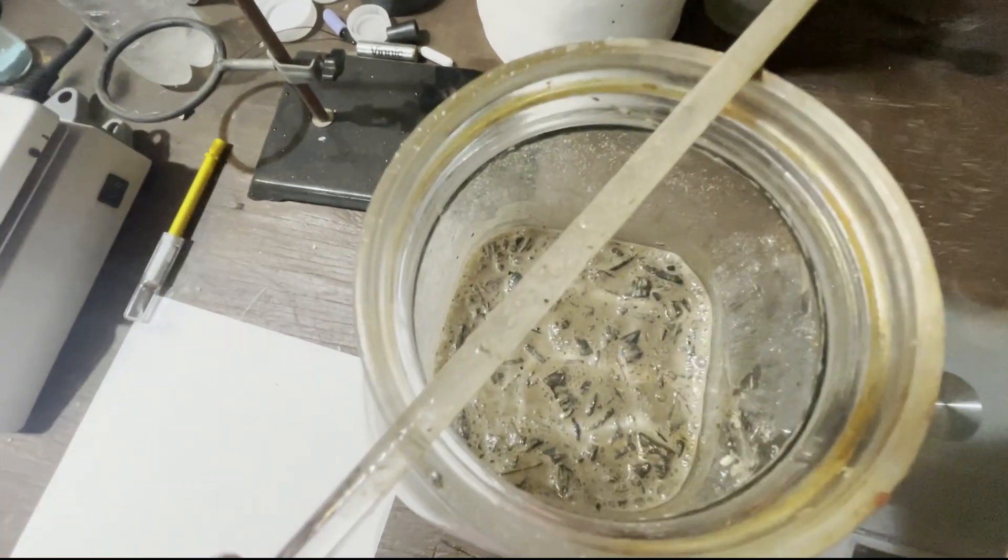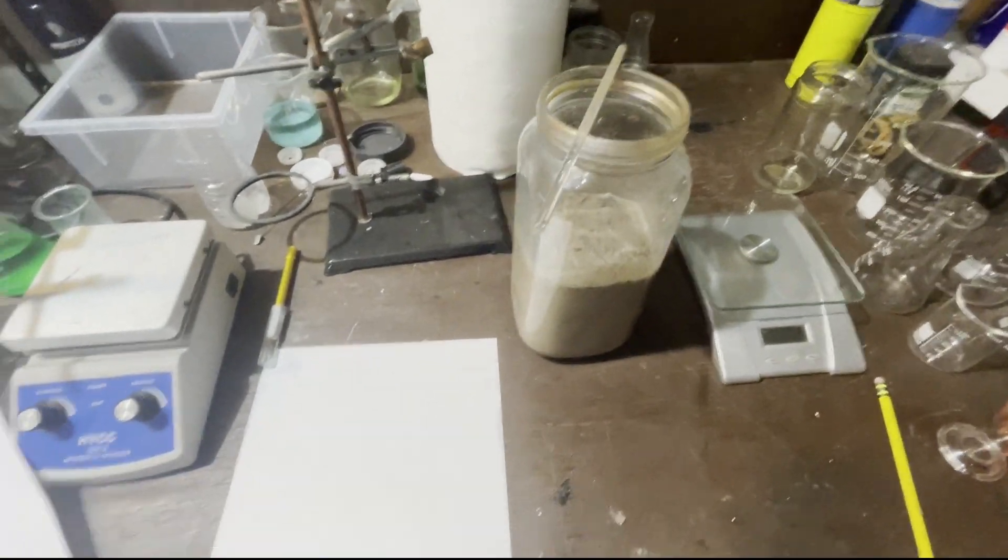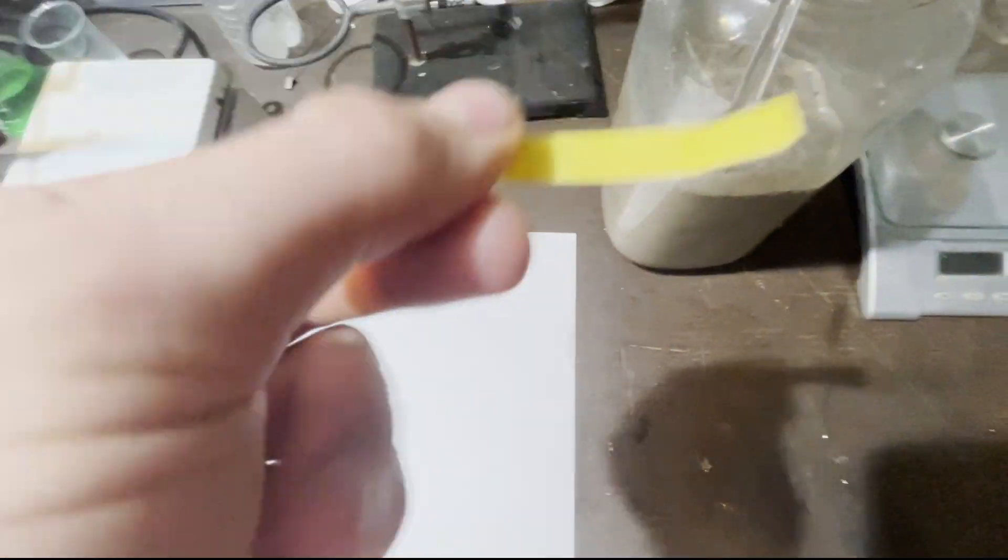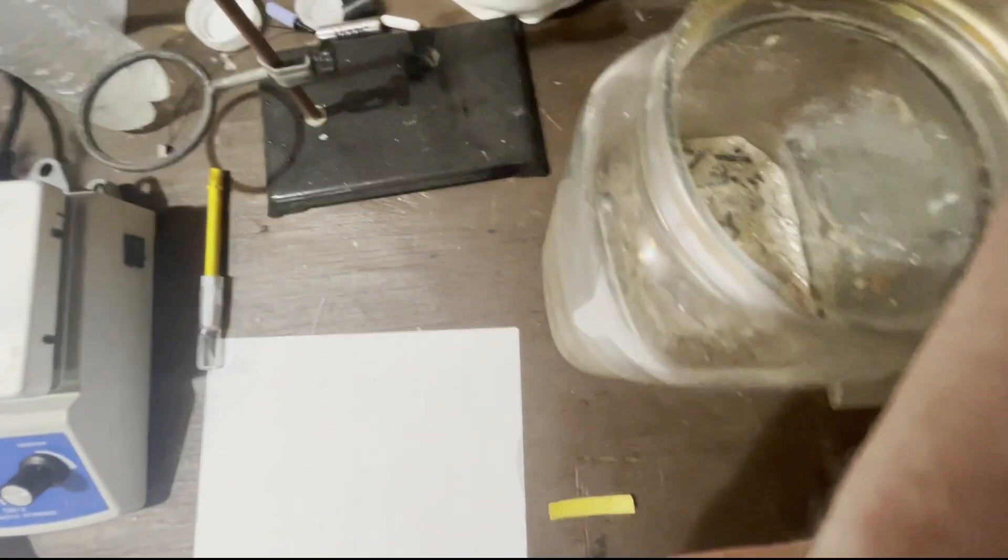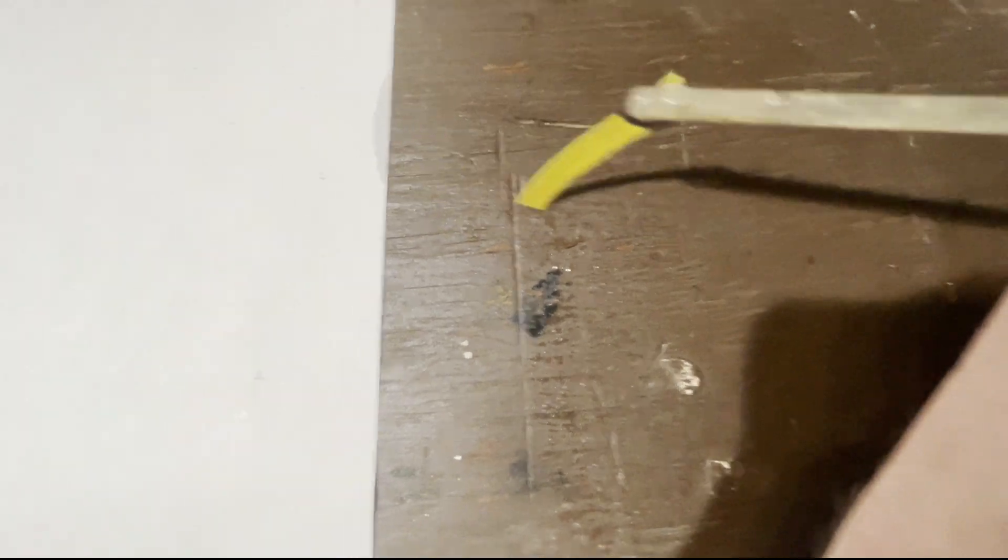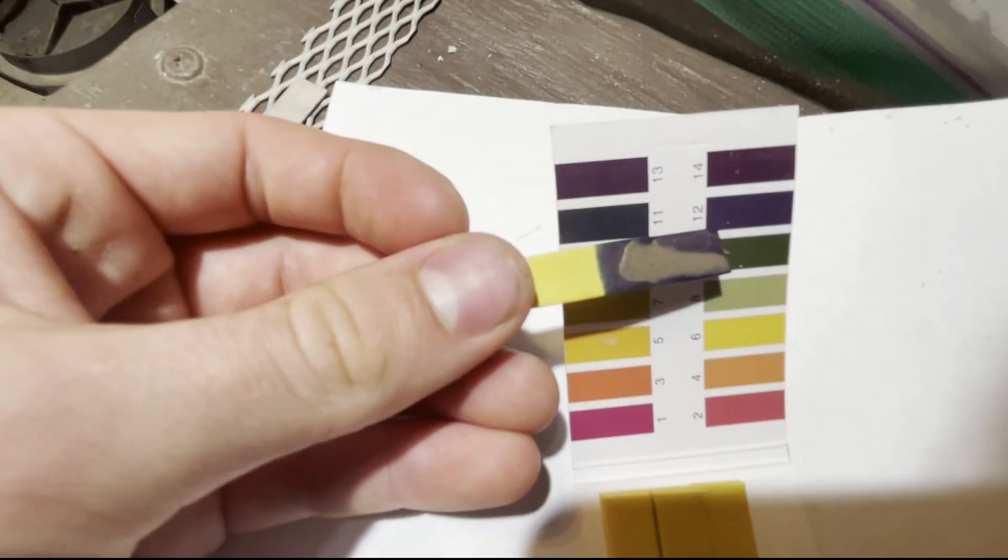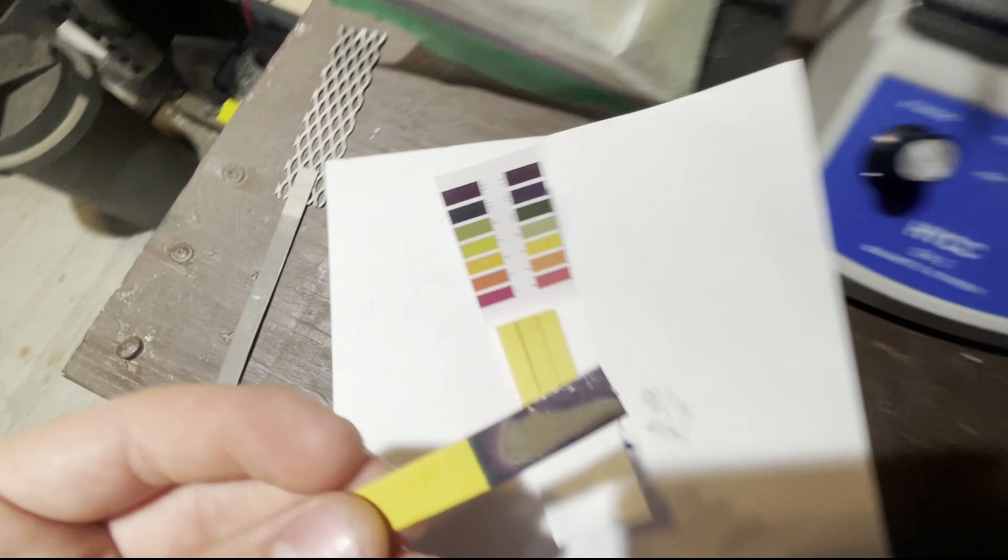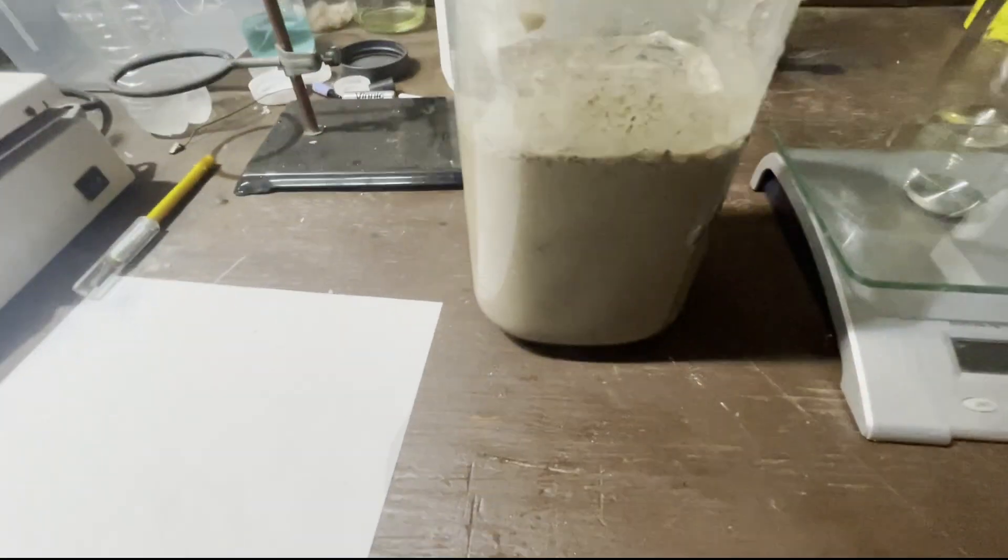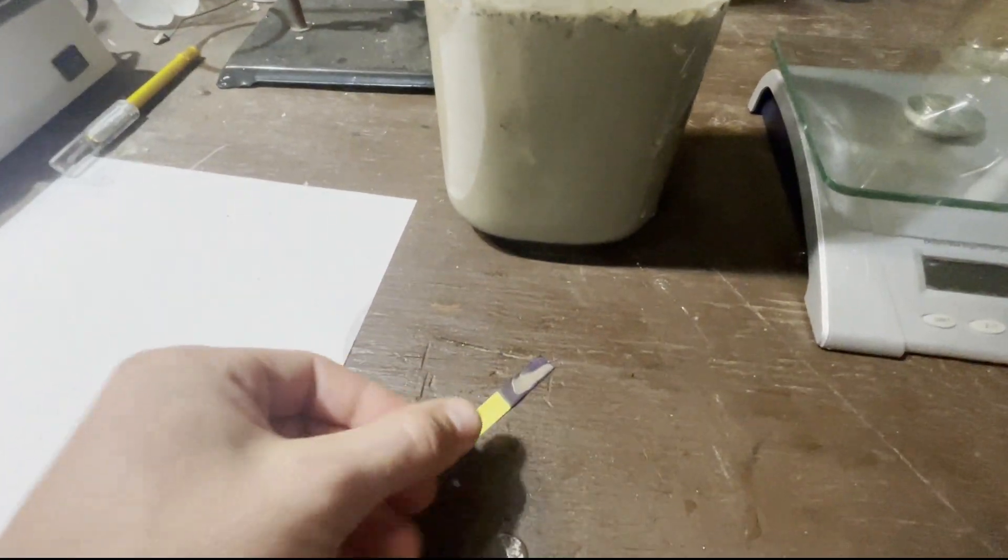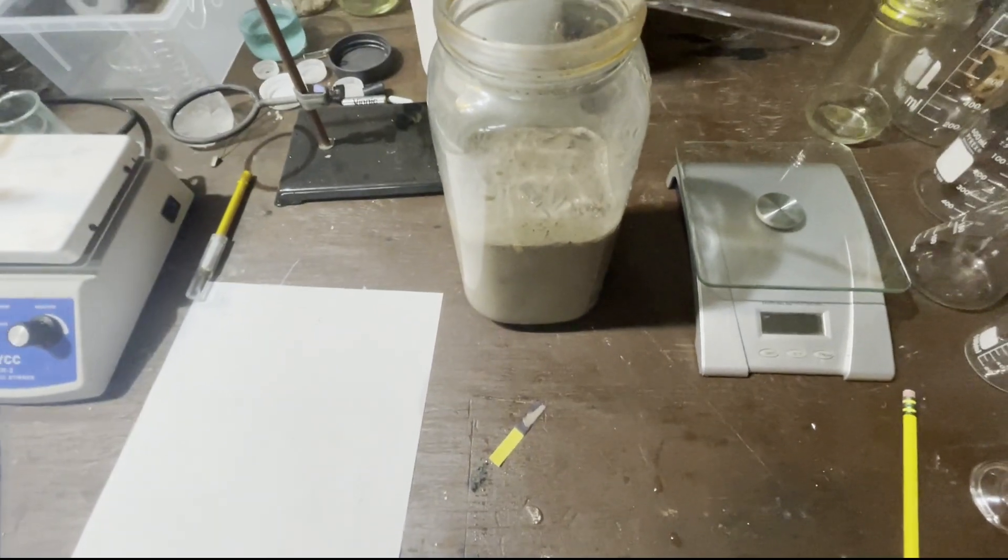Another neat thing about this ash water right here is its pH. I have some pH strips right here. If I get a pH strip and some of this liquid, I will find that it is very strongly basic. Almost an 11 or 12 on the pH scale. So, this means that this will definitely neutralize acid, which is good for the next step in this process.